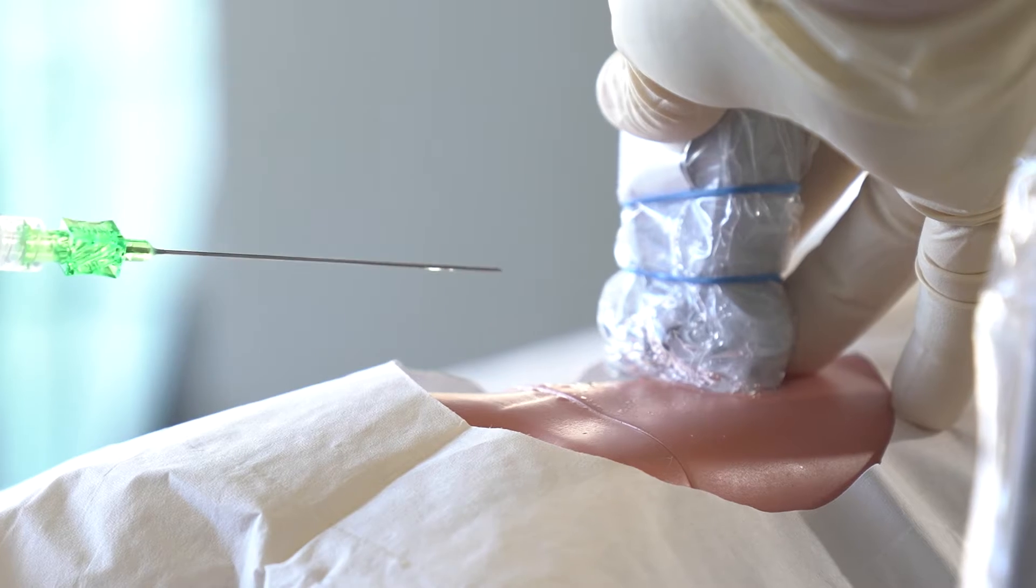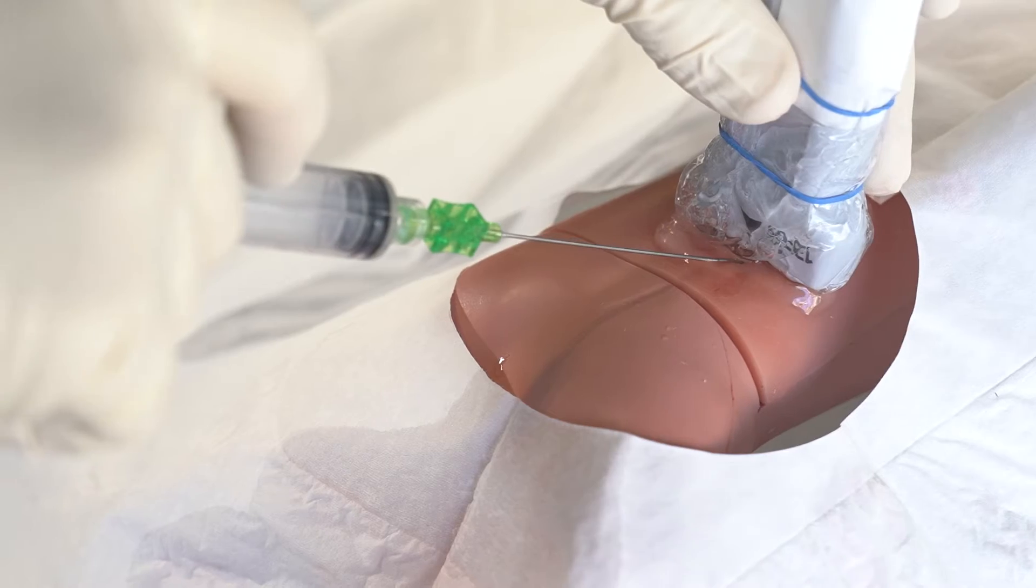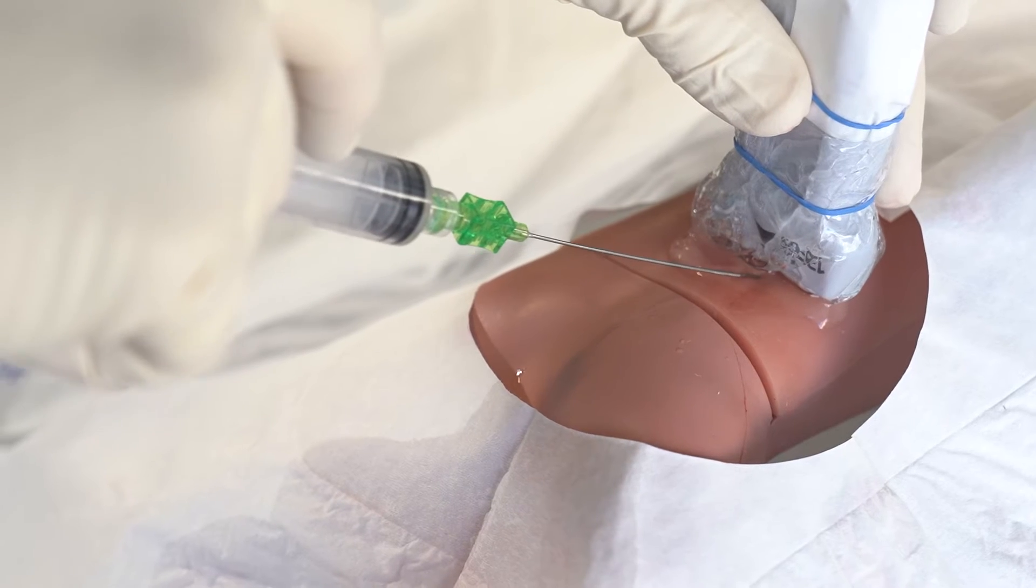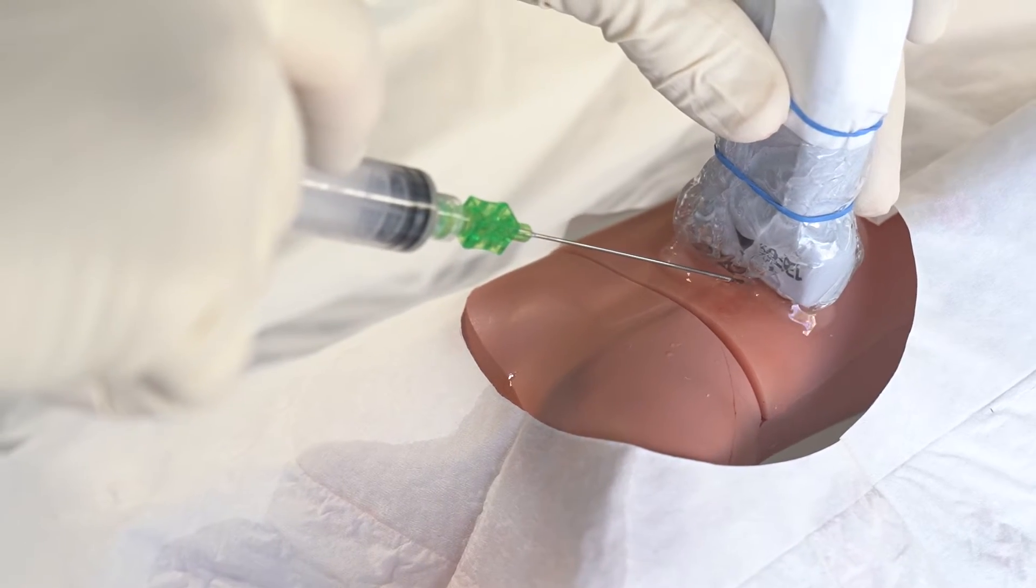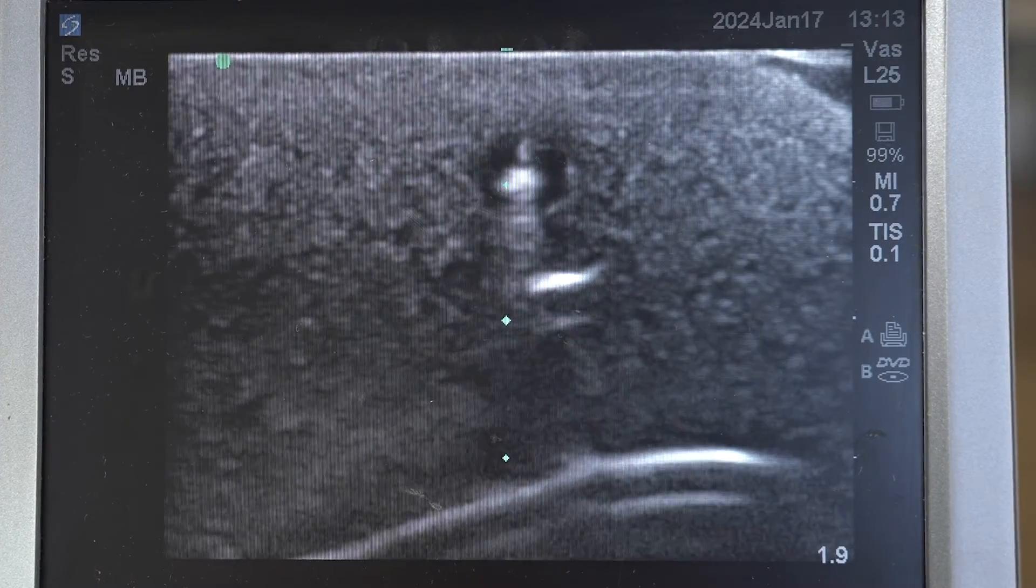Under ultrasound guidance, advance the micropuncture needle through the skin at approximately a 45 degree angle, ensuring the needle is placed with the bevel facing up. Follow the echogenic tip of the needle as it is advanced.